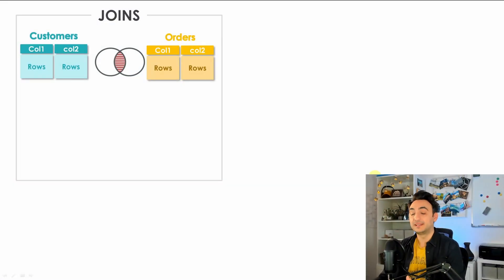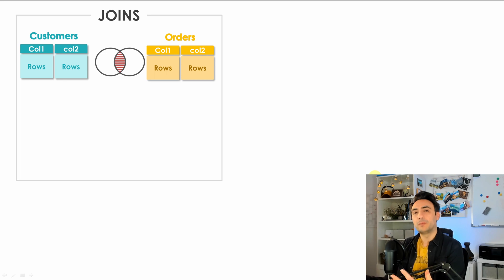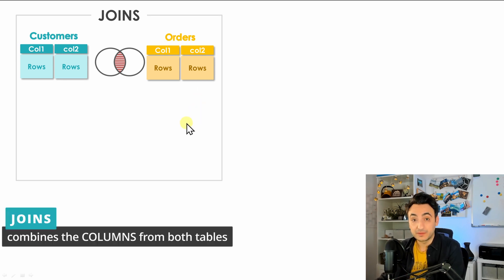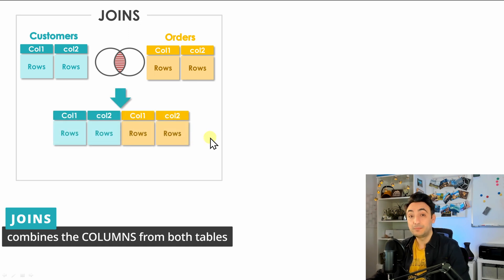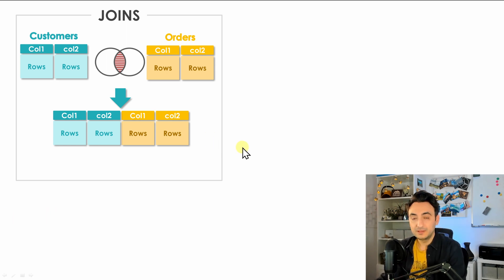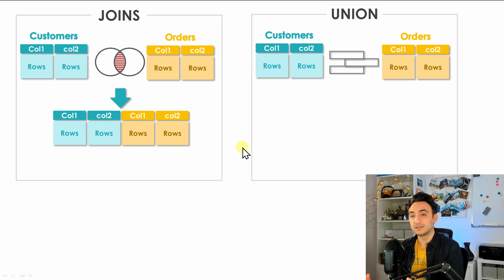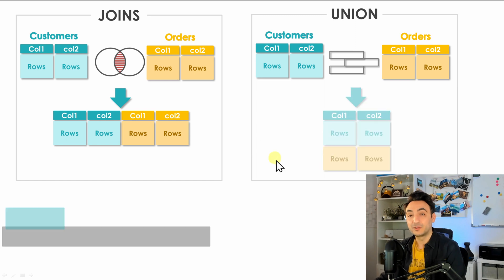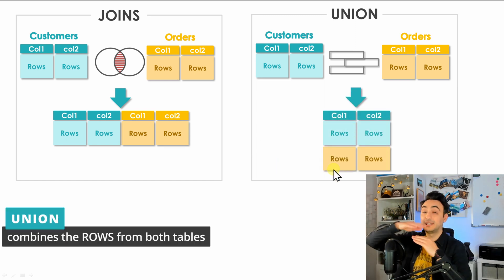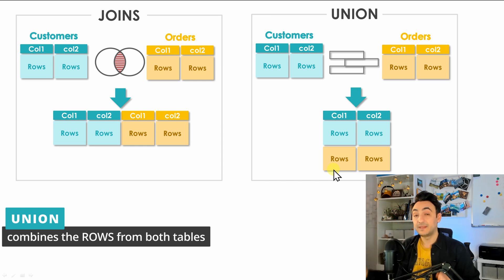Now we're going to learn how to combine tables using UNION. UNION is a very important and powerful tool in SQL. Previously we learned how to combine tables using JOIN, where we join two tables — customers and orders — to get one wide table with all columns from left and right. With UNION, we are also combining two tables, but instead of combining the columns, we combine the rows together, getting a very long table with all rows from both sides but the same columns.